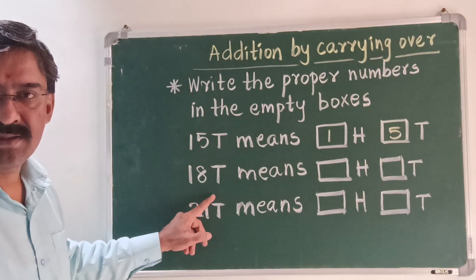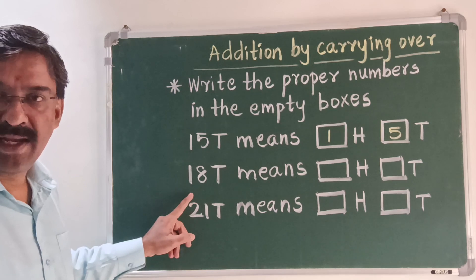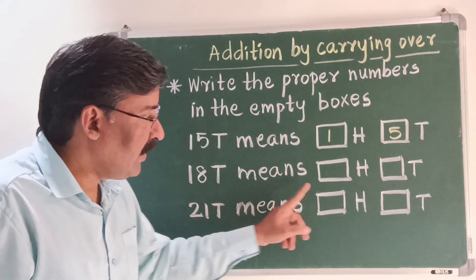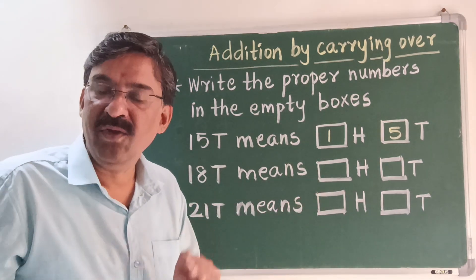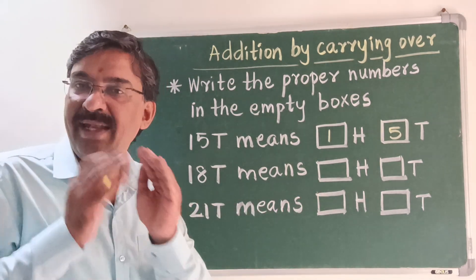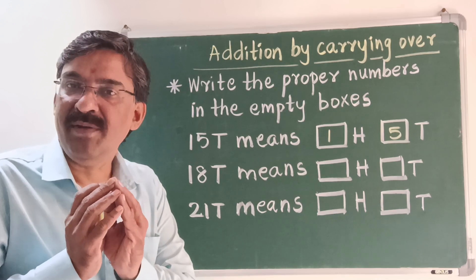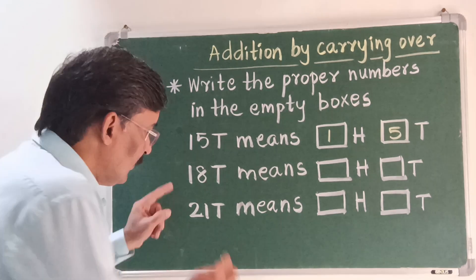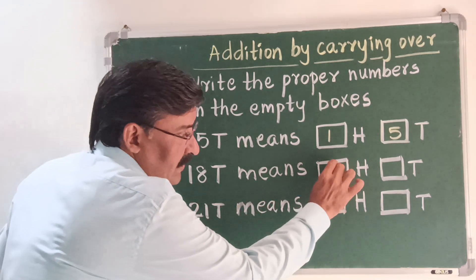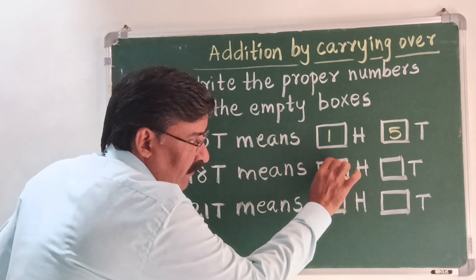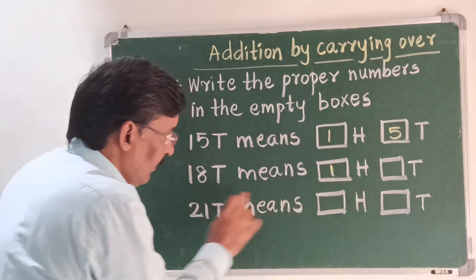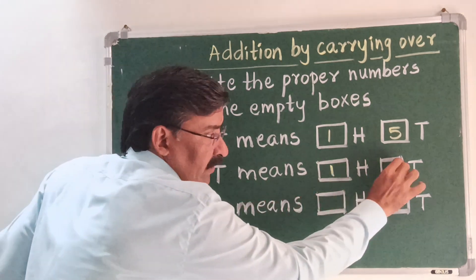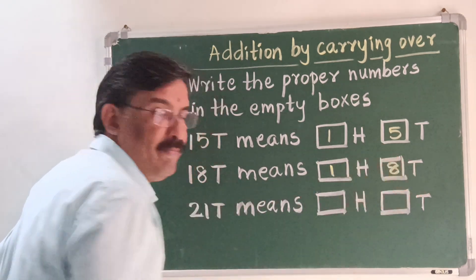18 tens — 18 tens means how many hundreds? In 18, you know that 10 tens will make 100. So in 18, if you take 10 tens it will be 1 hundred, and the remaining 8 will be 8 tens.